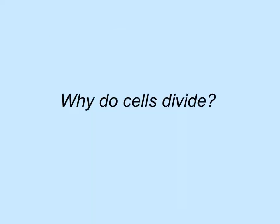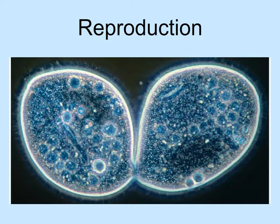Cells divide to produce more cells, but what are the reasons for producing those additional cells? Reproduction. Asexual reproduction occurs when offspring are produced from a single parent and occurs in single-celled organisms such as this paramecium, as well as multicellular animals such as hydras and sponges.